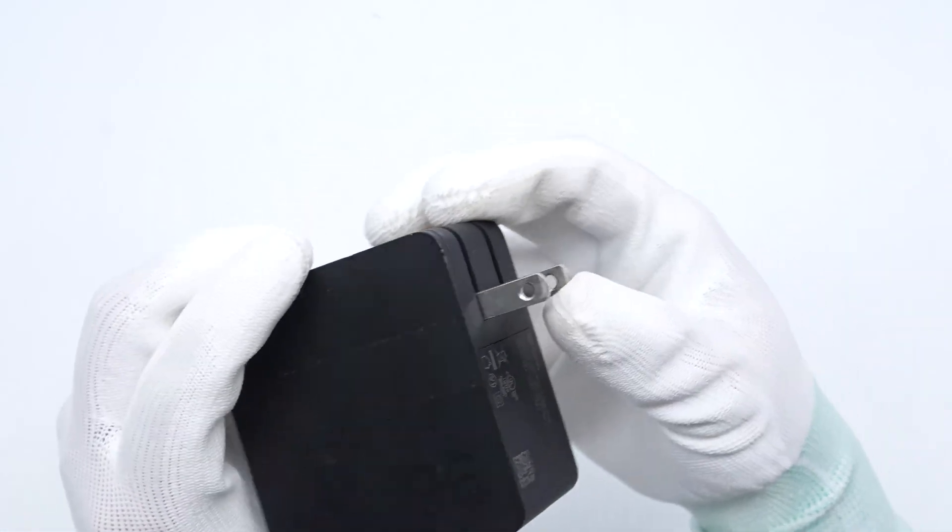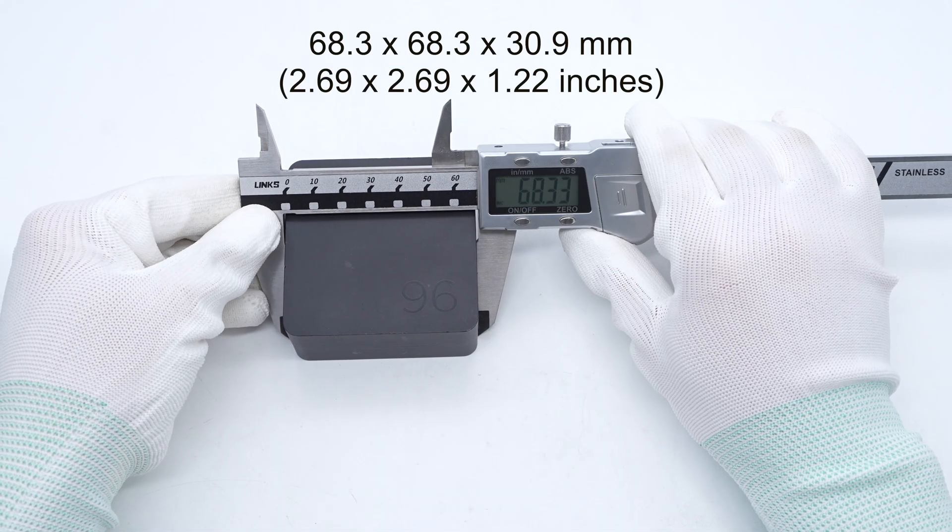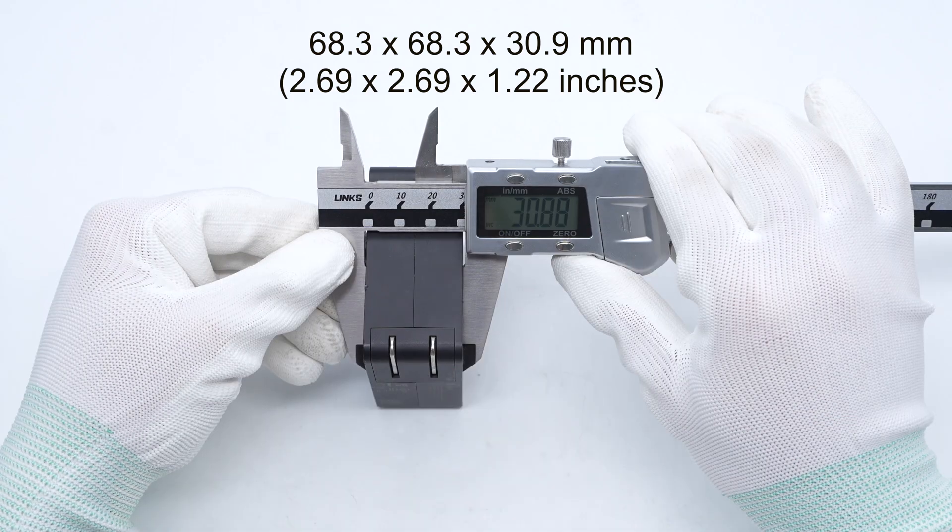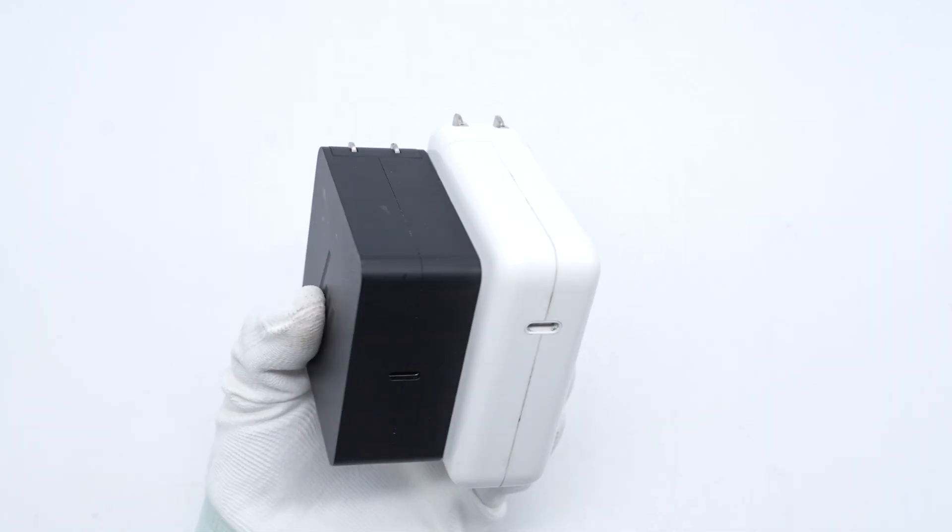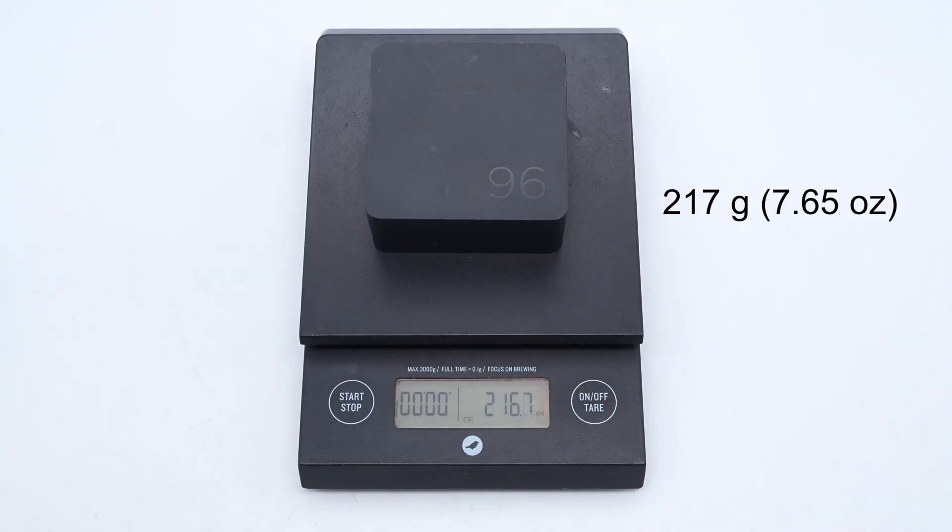Here is the foldable plug. It only has one USB-C port. Its size is about 68.3 by 68.3 by 30.9 millimeters. It is slightly smaller than the Apple 96 watt charger, and the weight is about 217 grams.